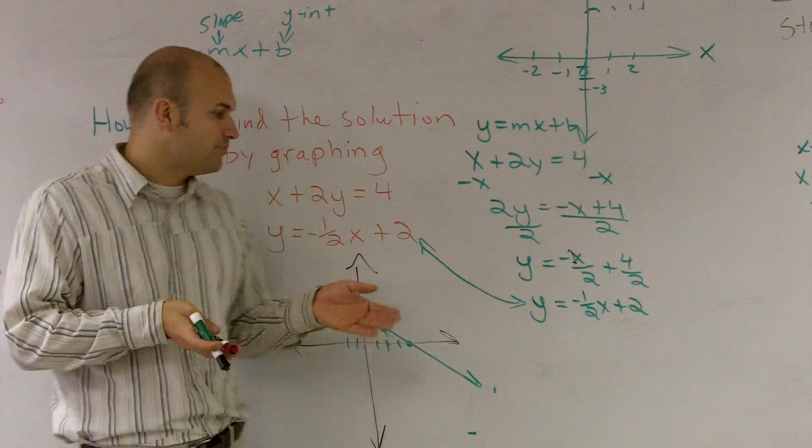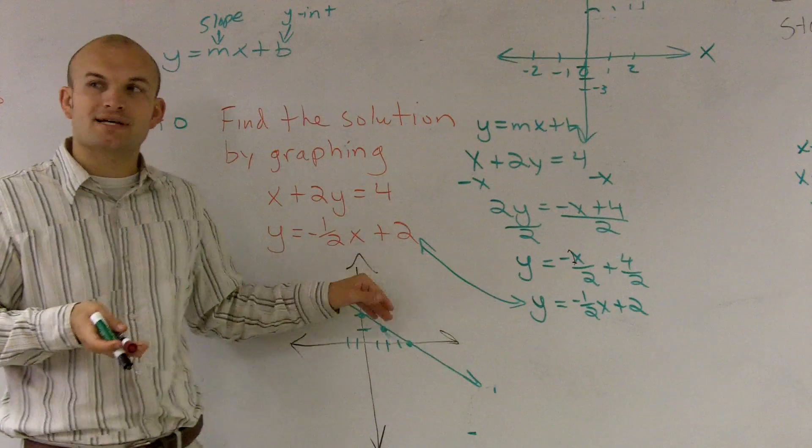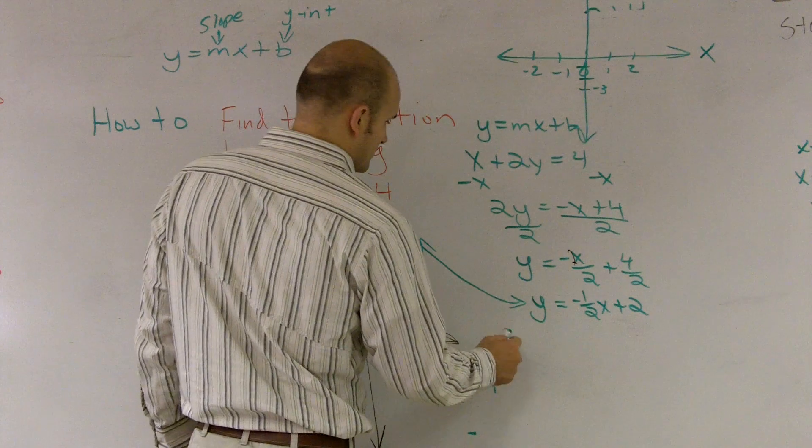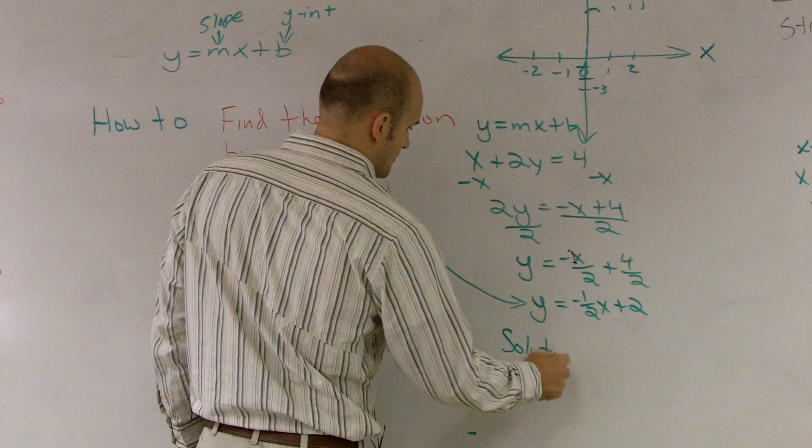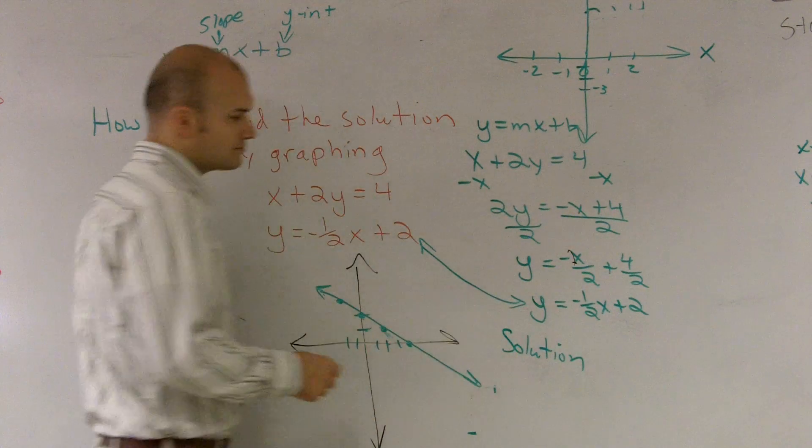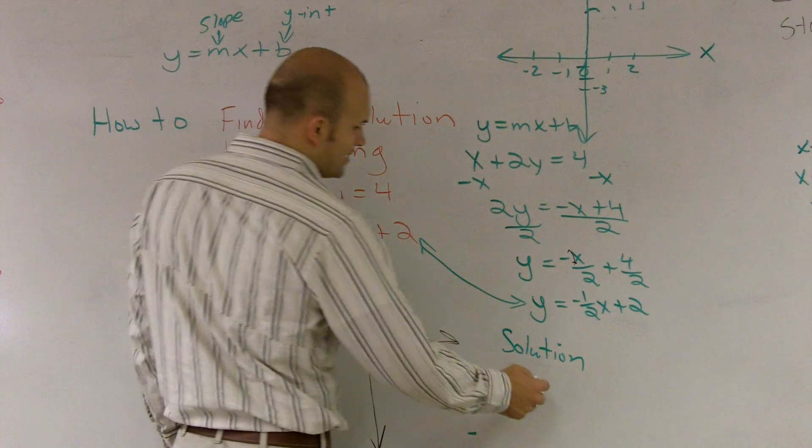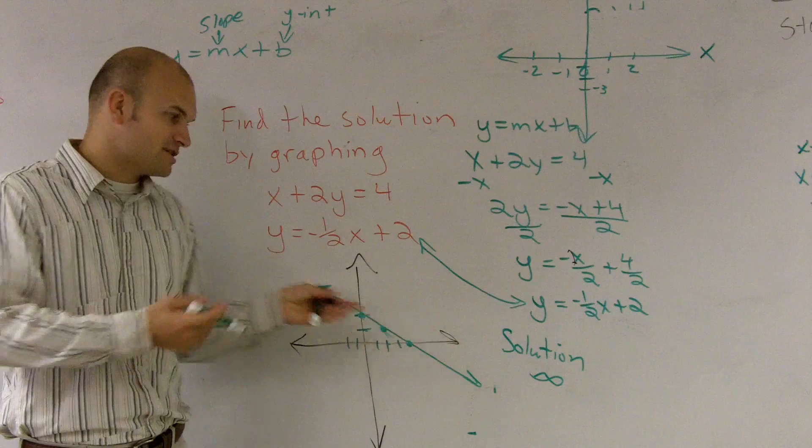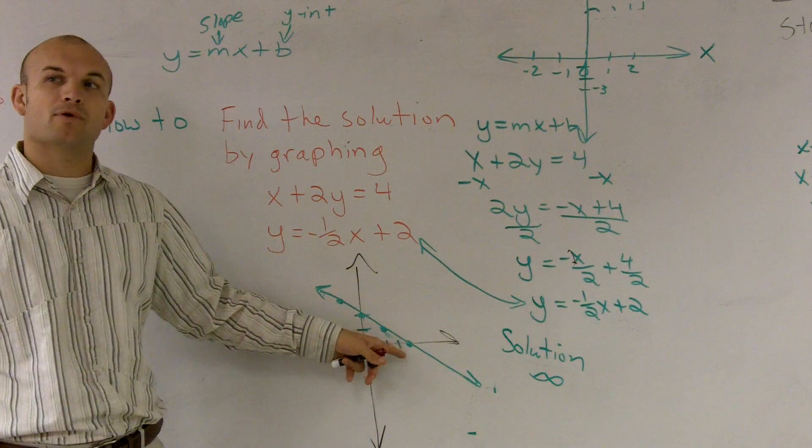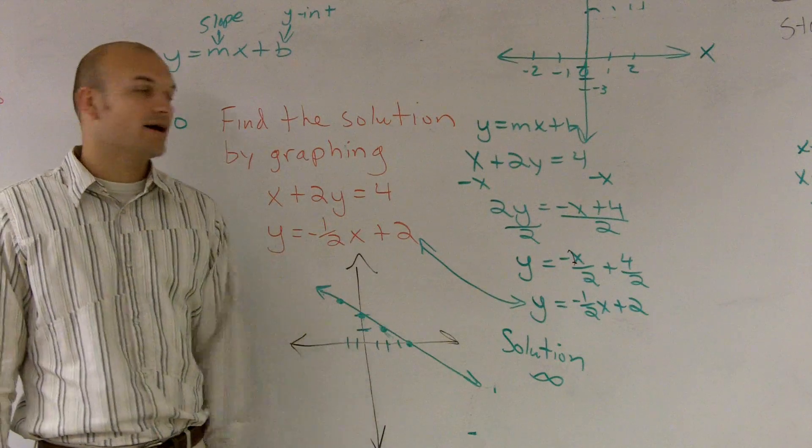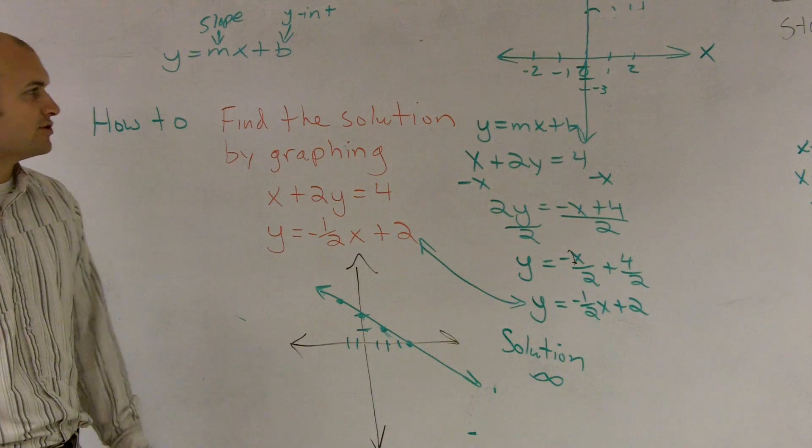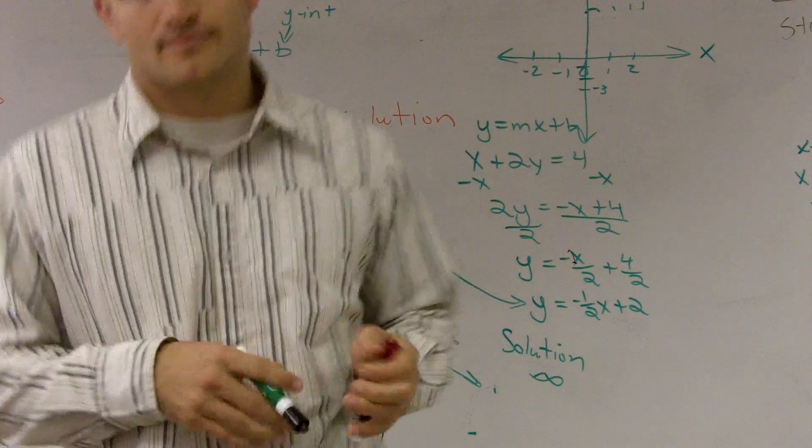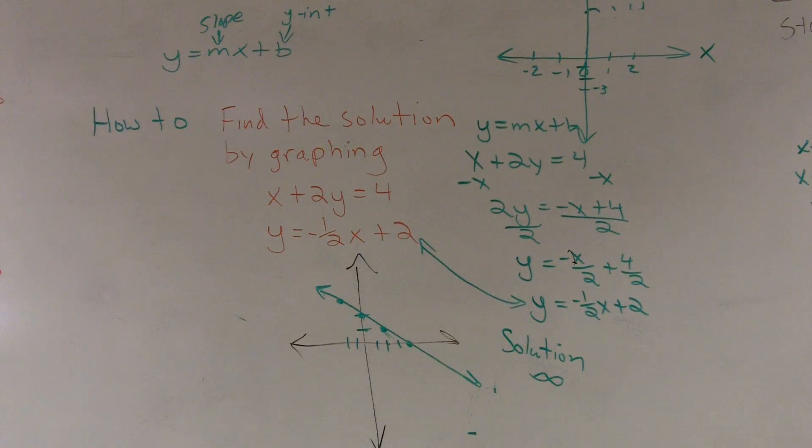So you can notice that every single point on those two lines are intersecting. So therefore, our solution is going to be infinity. Because what happens is our graph, they don't just connect at one point. They don't intersect at one point. Every single point, they intersect. So your solution is going to be infinity. So that's how you find the solution by graphing.